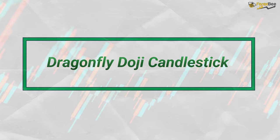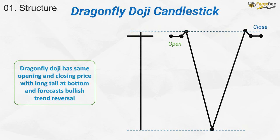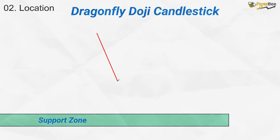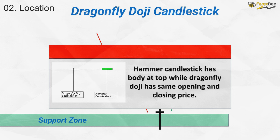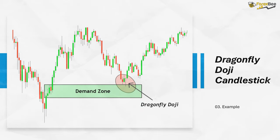Now moving on, let's talk about the Dragonfly Doji candlestick pattern. In a Dragonfly Doji, the opening and closing prices are the same, with a long lower shadow or tail, indicating strong buying pressure and forecasting a potential bullish reversal. Since this is a bullish reversal pattern, it often forms at support or demand zones. It's also important to understand the difference between a Dragonfly Doji and a hammer — the key distinction is that a hammer has a small body at the top, whereas a Dragonfly Doji has the same opening and closing price, showing indecision before the reversal. In this example, the Dragonfly Doji forms at a demand zone, leading to a trend reversal from bearish to bullish.